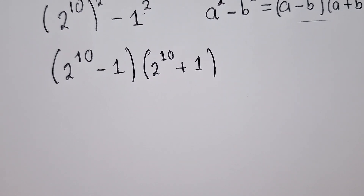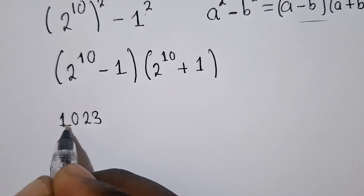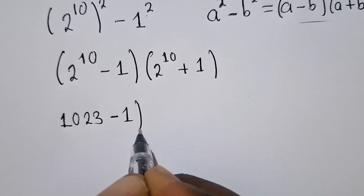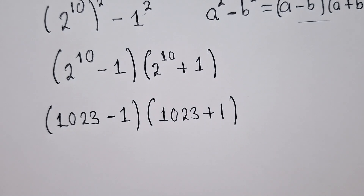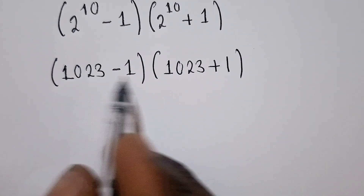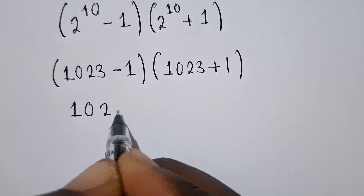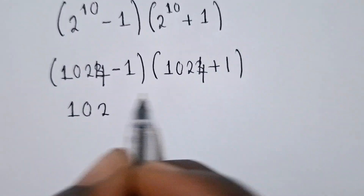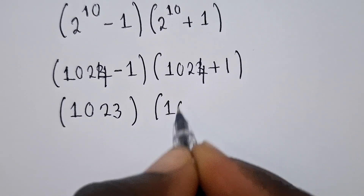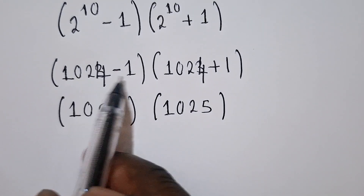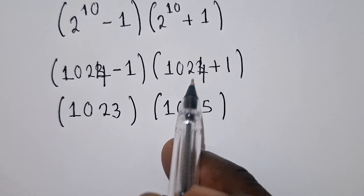We know that 2 power 10 gives us 1,024. So we have 1,023 minus 1, and here 1,023 plus 1. Simplifying inside the brackets: subtracting 1 from 1,024 gives us 1,023, and adding 1 to 1,024 gives us 1,025.